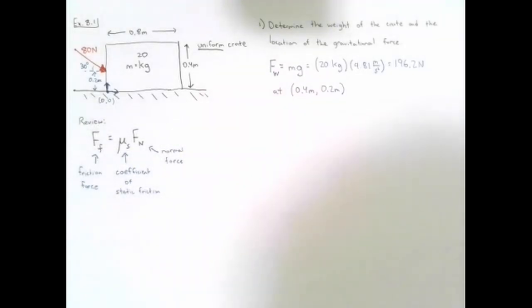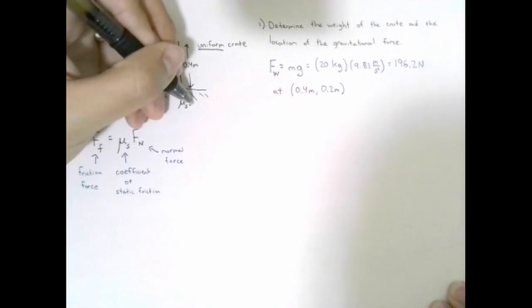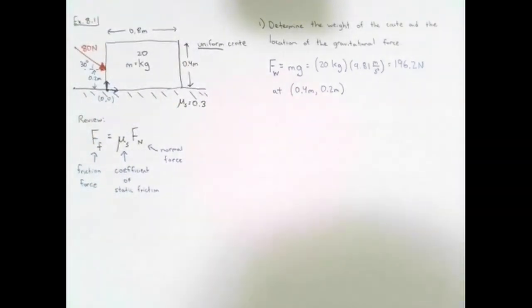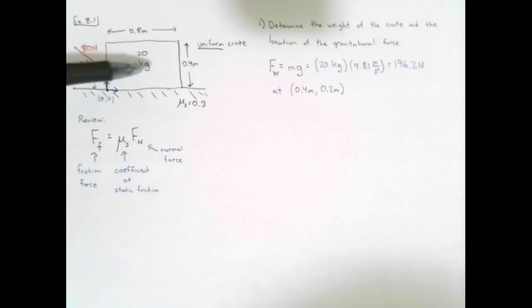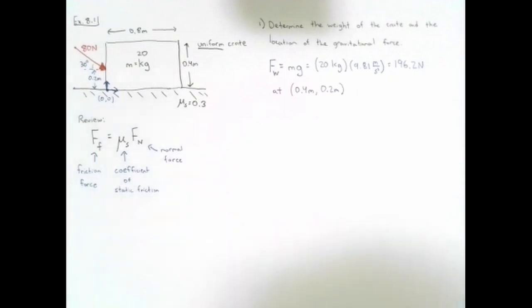For this crate and the floor underneath it, the coefficient of static friction mu_s is given as 0.3. In order for this crate to be in equilibrium, there has to be a normal force counteracting the weight and the vertical component of the 80 Newton force, and a friction force counteracting the horizontal component of the 80 Newton force.